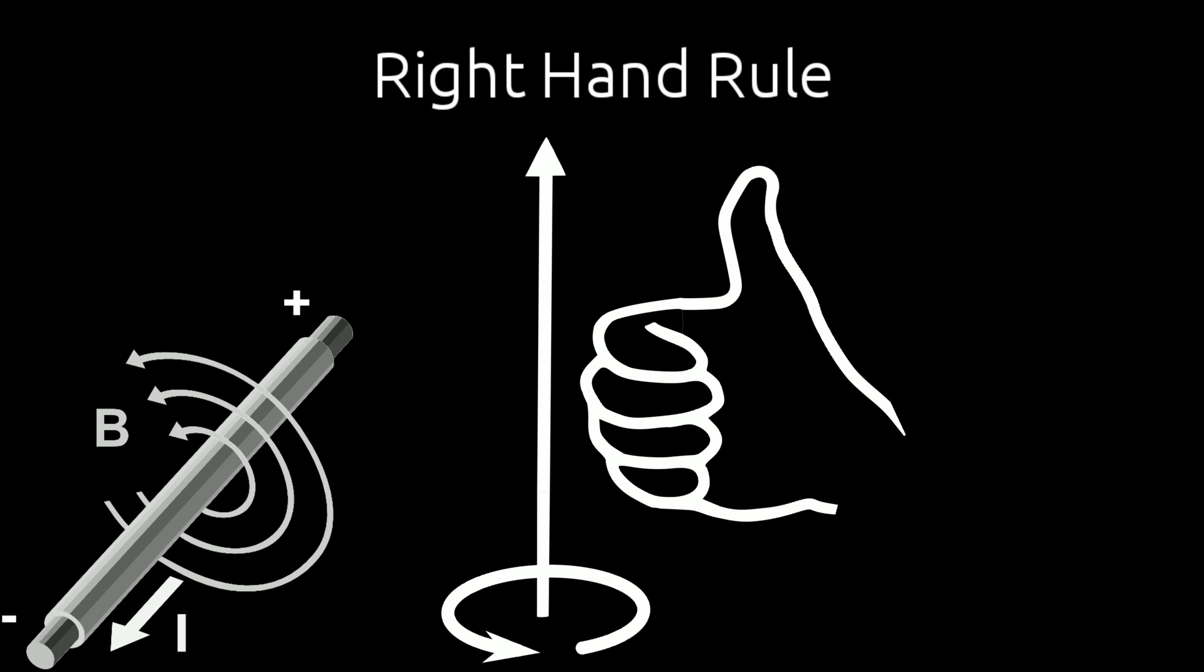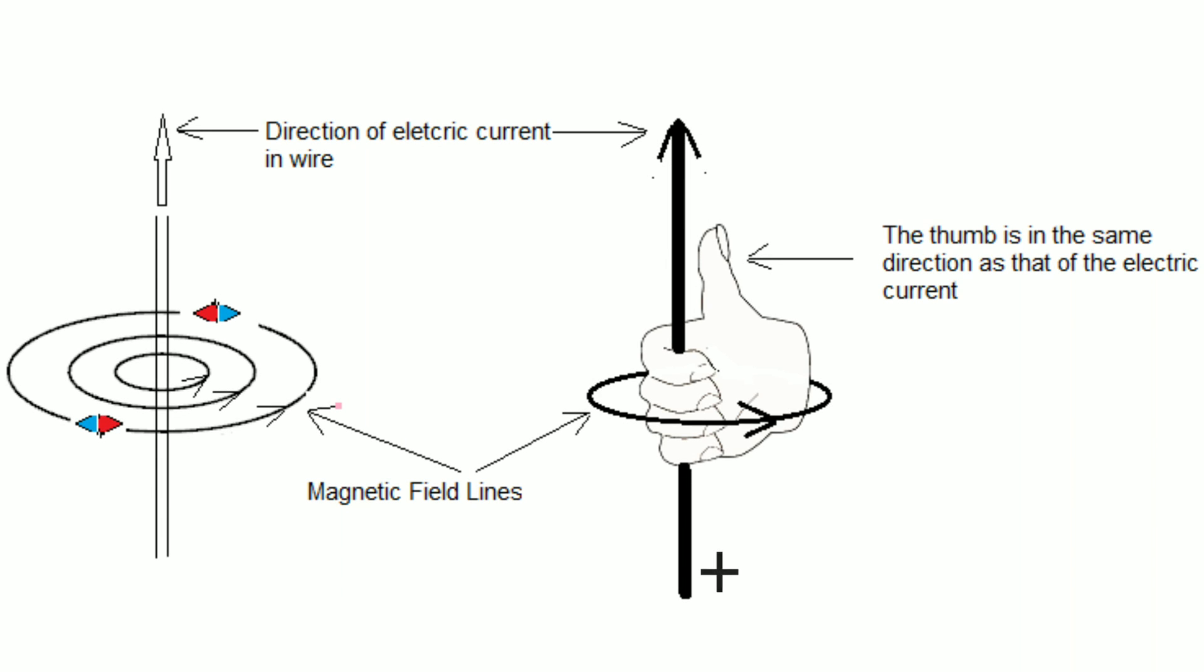If you grab a wire, the thumb shows the direction of current flow and the other four fingers show the direction of the magnetic field.